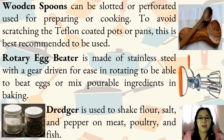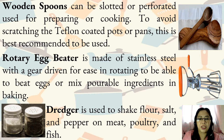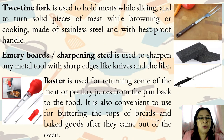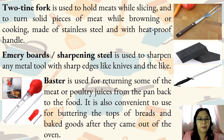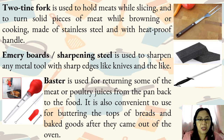Rotary egg beater is made of stainless steel with a gear-driven mechanism for ease in rotating, used to beat eggs or mix pourable ingredients in baking. Dredger is used to shake flour, salt, and pepper on meat, poultry, and fish. Two-tine fork is used to hold meats while slicing and to turn solid pieces of meat while browning or cooking, made of stainless steel with a heatproof handle. Emery boards or sharpening steel is used to sharpen any metal tool with sharp edges like knives. Baster is used for returning some of the meat or poultry juices from the pan back to the food, and is also convenient for buttering the tops of breads and baked goods after they come out of the oven.